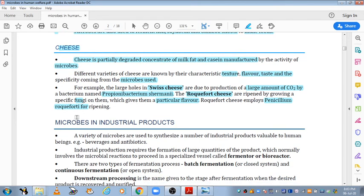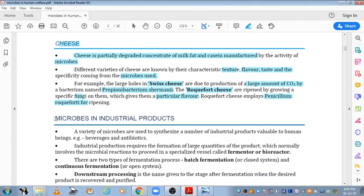Now let's talk about microbes in industrial products. Microbes are also used in industries. Which products do we make? A variety of microbes are used to synthesize a number of industrial products which are useful for us, like beverages and antibiotics. Beverage means alcoholic beverages. Industrial production requires formation of large quantities of the products. If we make it on industrial scale, we produce large amounts. We form them in large vessels called fermenters and bioreactors. We perform two types of fermentation: batch fermentation and continuous fermentation. These two we will discuss in our next video.